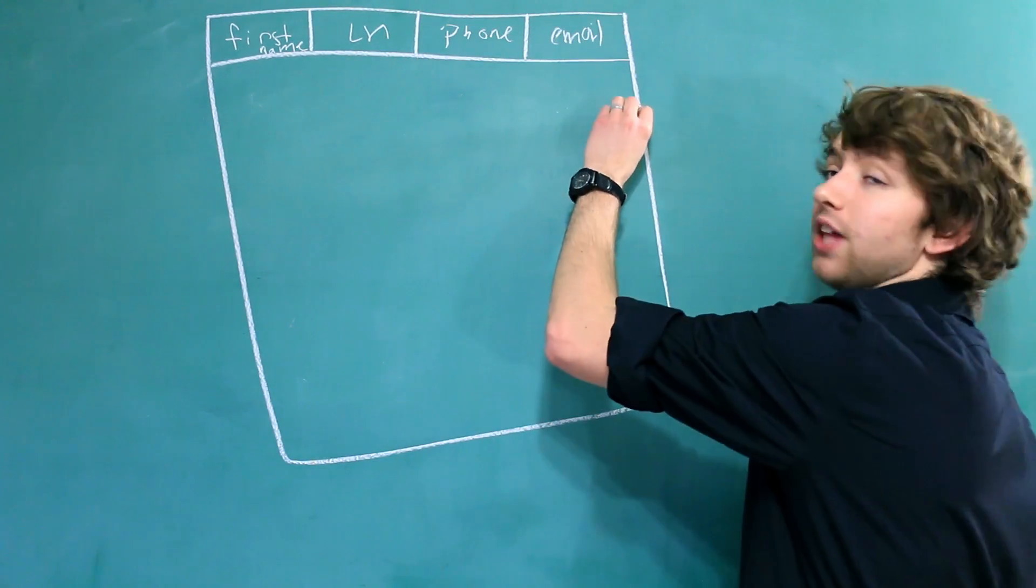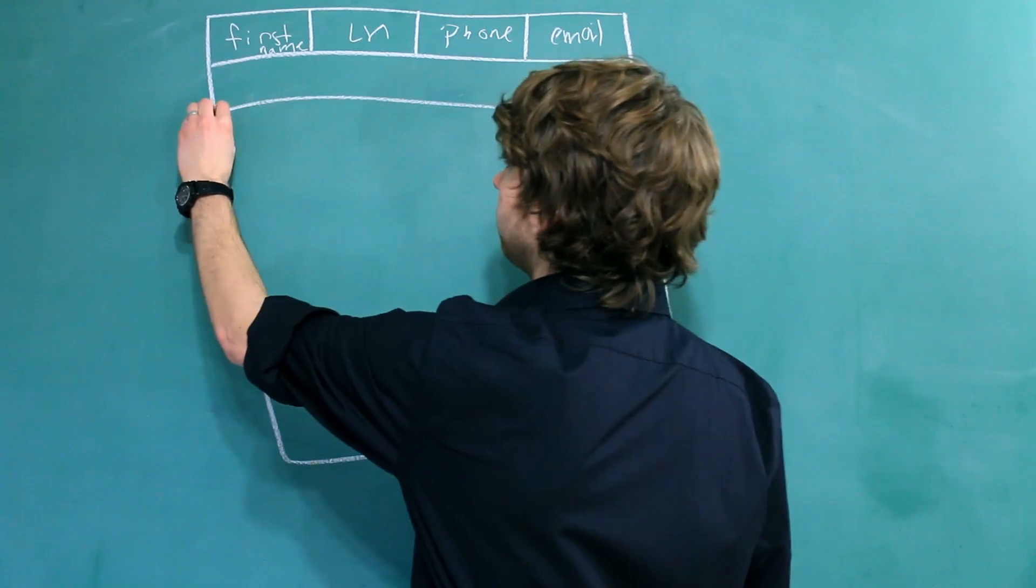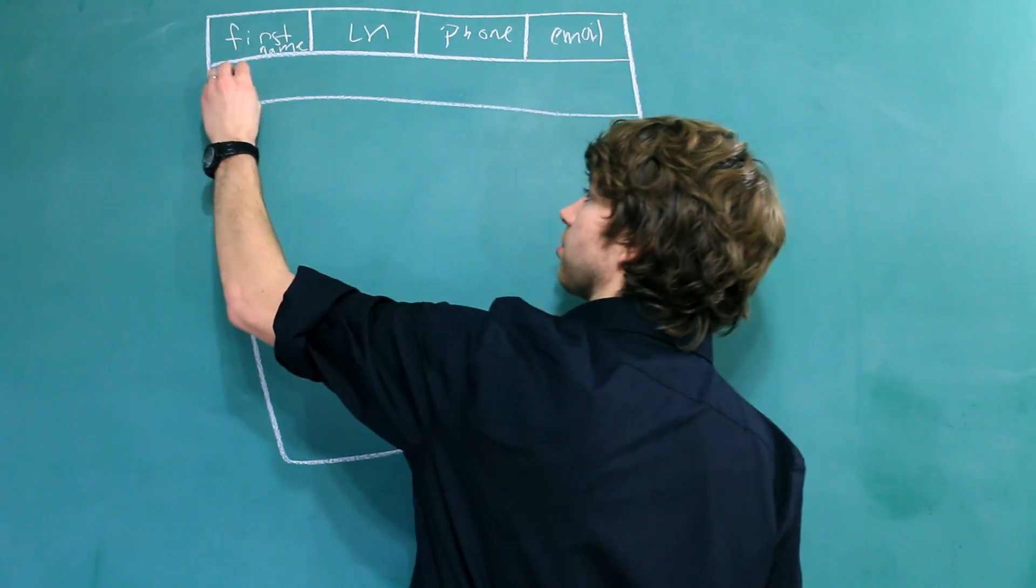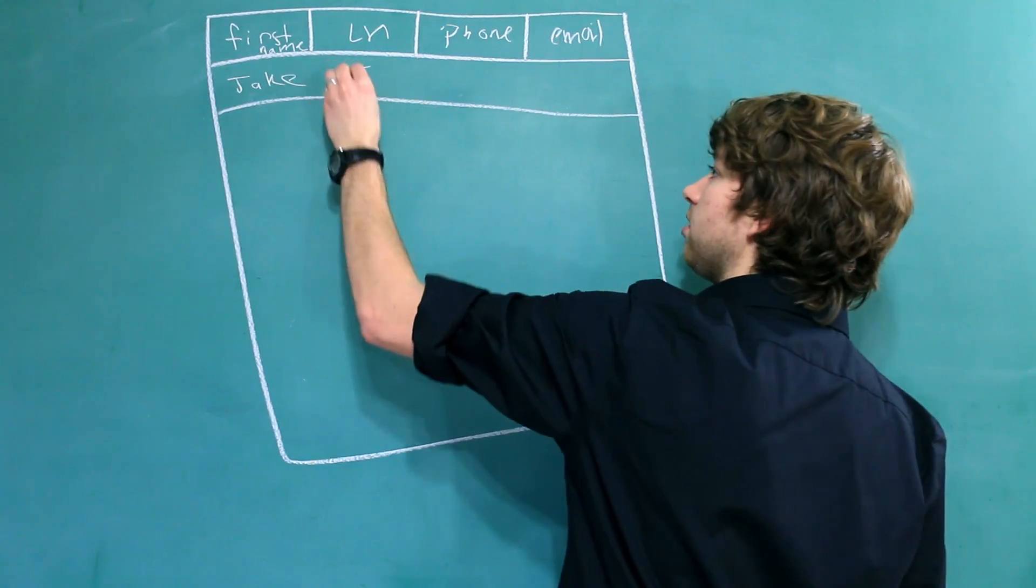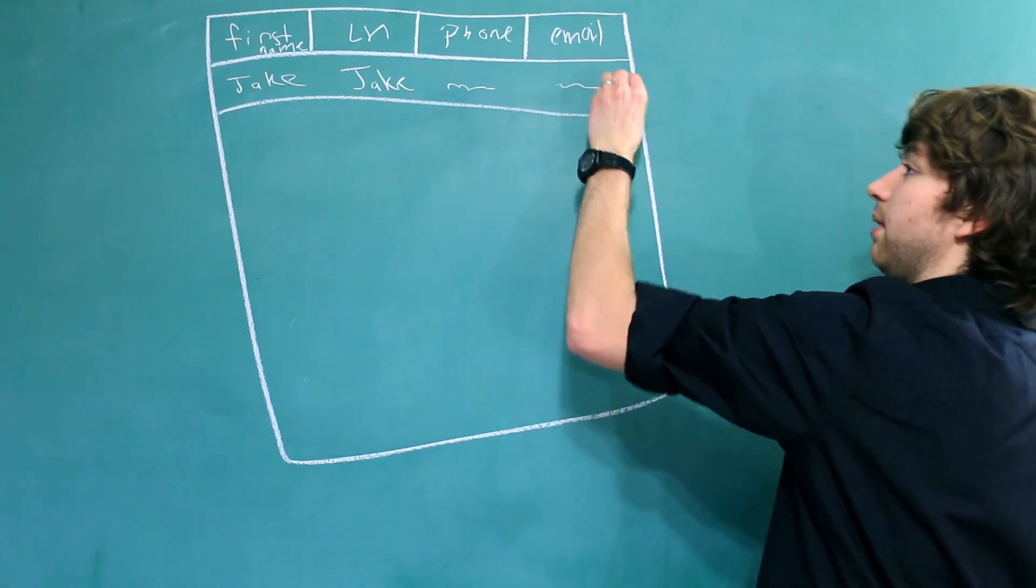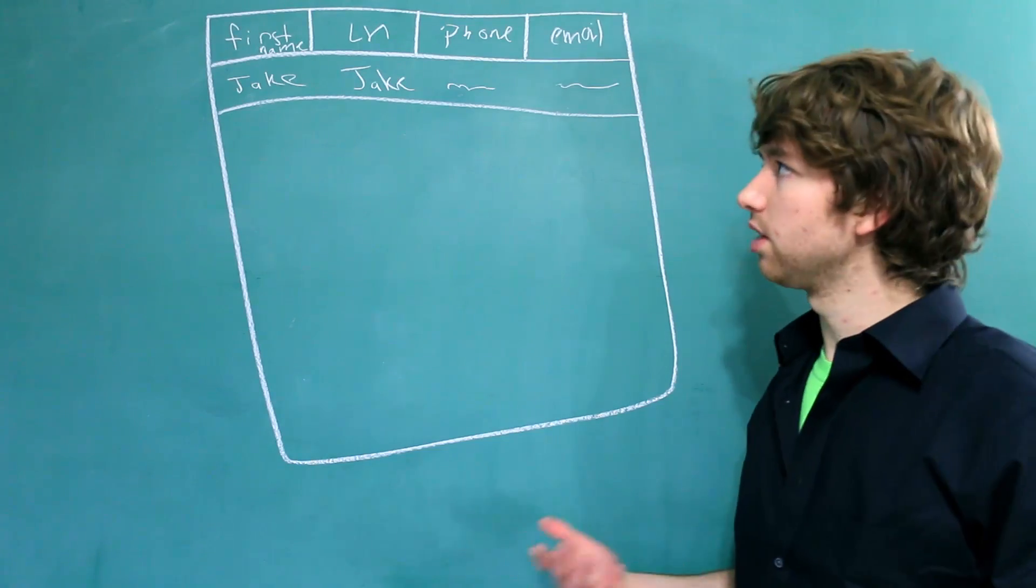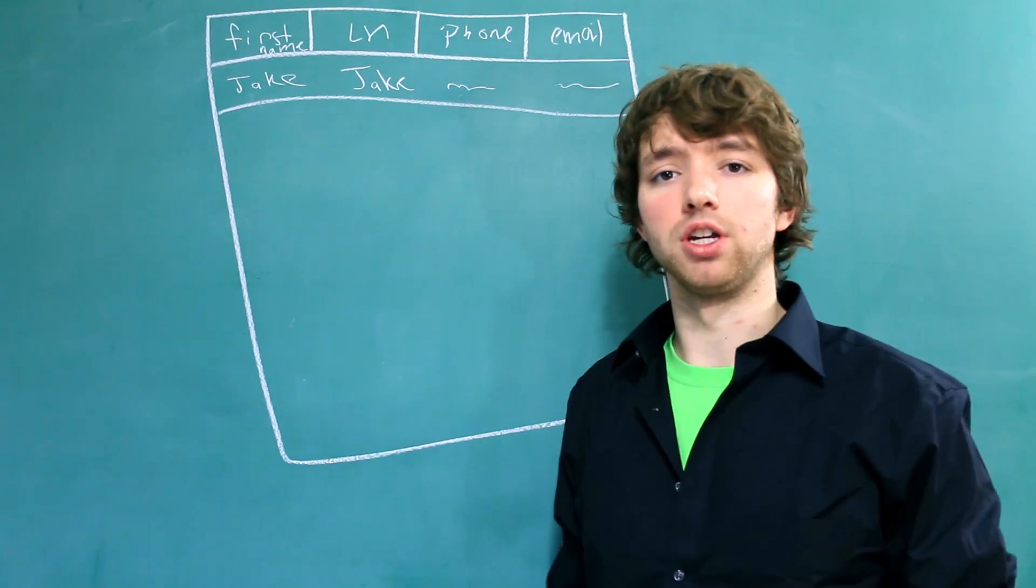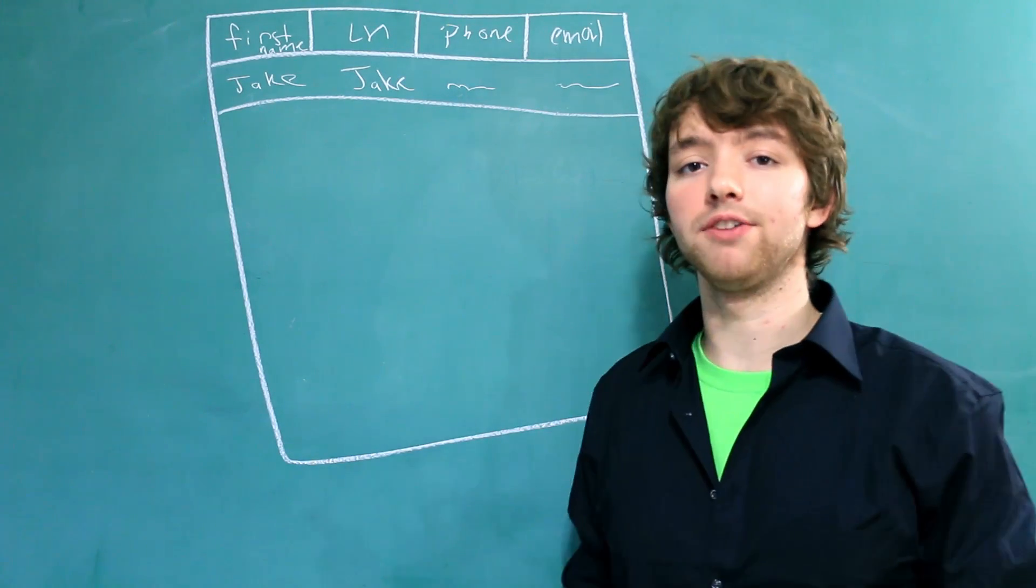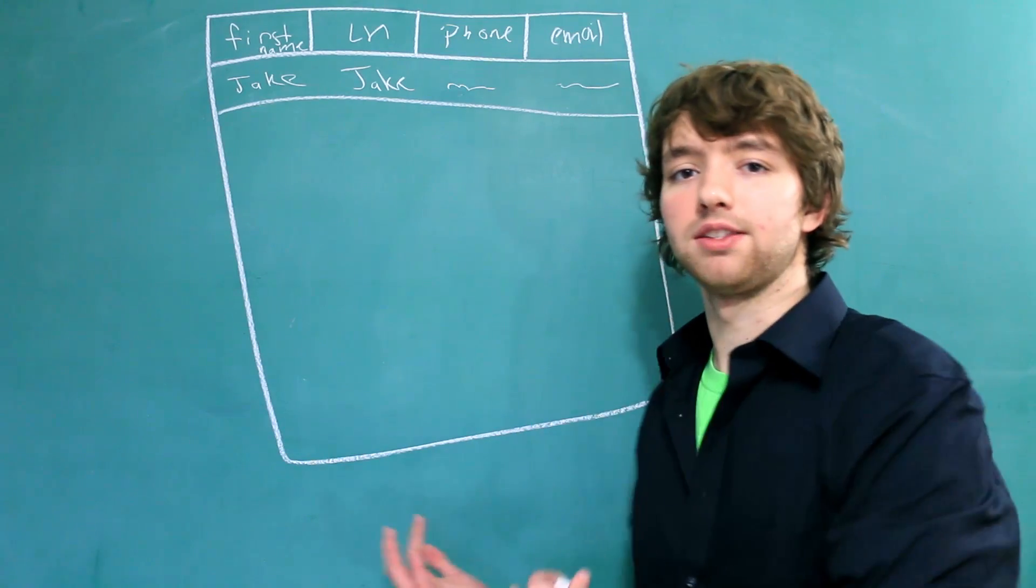Then an individual row will fill out that information. So one person will put in his first name, his last name, his phone number, and his email. And you can continue to store more and more people inside of this table. So it's kind of like an Excel spreadsheet, but there are a lot of differences between a database and Excel.